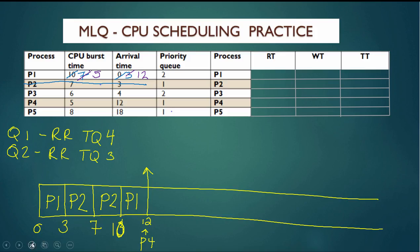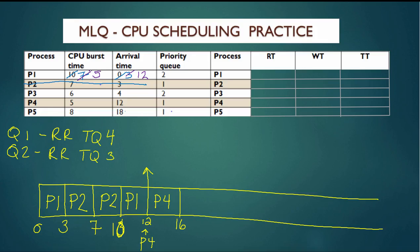Now the current time is 12. Since P4 is a level-one process, it will not be preempted by any other process. P4 will go for four time units until time 16. P5 has not arrived yet; if P5 had arrived at time 14 it would go before P4, but P5's arrival time is 18, so P4 will go again and complete its last CPU burst, finishing execution at time 17.